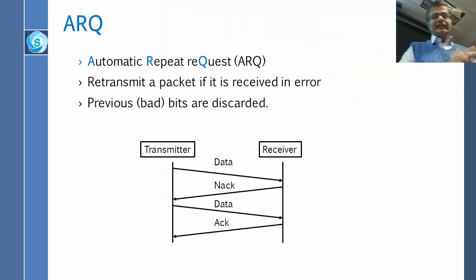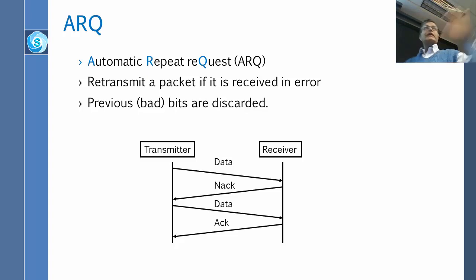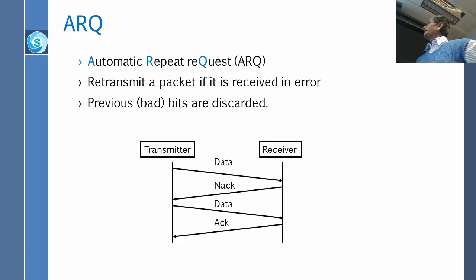ARQ stands for Automatic Repeat Request. Basically, the idea is that you transmit data, and if a packet is received in error — in IP and actually in TCP as well — you send the data, and if the data does not make it, the receiver sends a NAK. If you get a NAK, you send the data again, and if you get the ACK, you are all set.